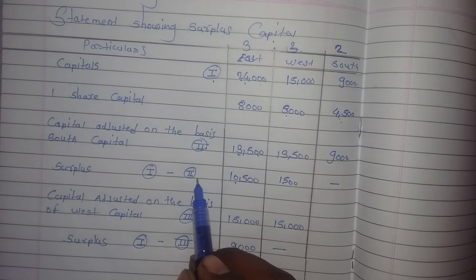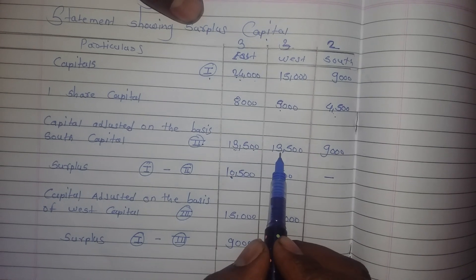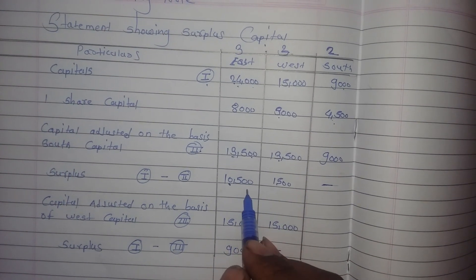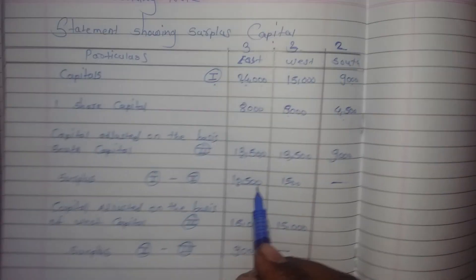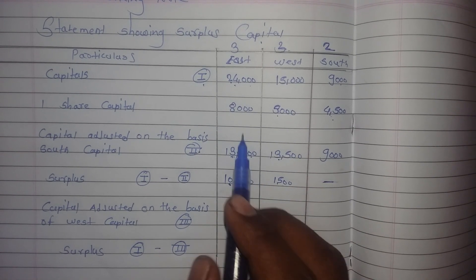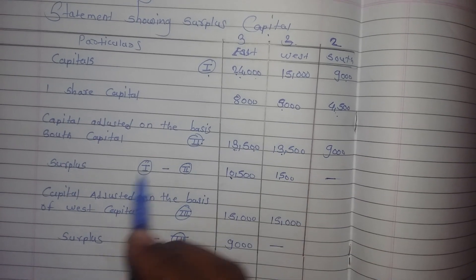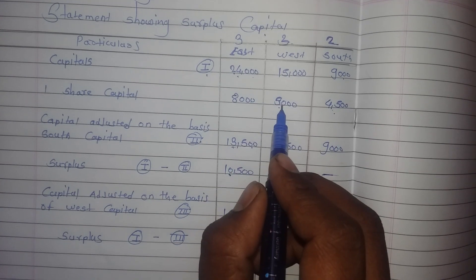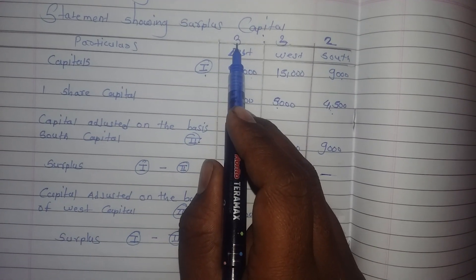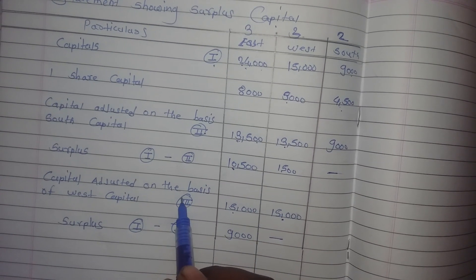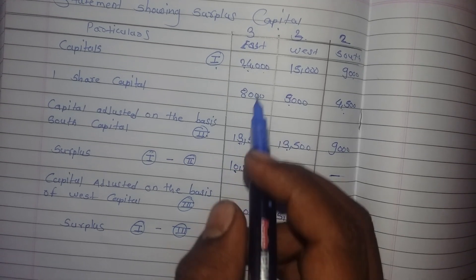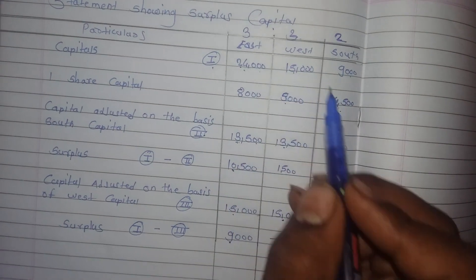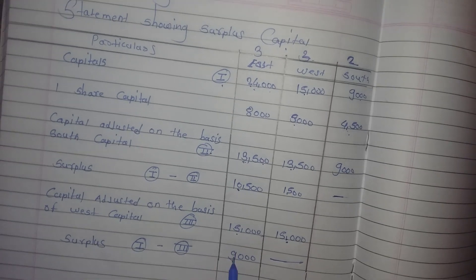We multiply South's one share capital by each partner's ratio: 4,500 × 3 = 13,500; 4,500 × 3 = 13,500; 4,500 × 2 = 9,000. Subtracting: East has 24,000 − 13,500 = 10,500 surplus; West has 15,000 − 13,500 = 1,500 surplus; South has 9,000 − 9,000 = 0 balance. Now two partners have surplus. We check the next lowest one share capital between East (8,000) and West (5,000). West's is less, so we adjust on the basis of West's capital: 5,000 × 3 = 15,000 and 5,000 × 3 = 15,000. This is Roman III in the working notes.